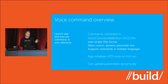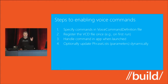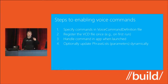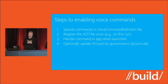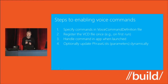The way you do it is you specify the commands your application can handle in a Voice Command Definition (VCD) file. It allows dynamic parameter lists, so you can change the phrases it listens for over time — depending on things like a list of favorites, or using geolocation to determine restaurants in the area. The VCD file also accepts commands in multiple languages. There are basically four steps for enabling voice commands in your application: specify the VCD file, register it, handle the voice command launch, and optionally update phrase lists dynamically.